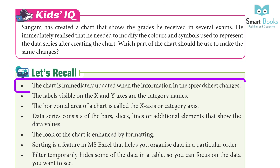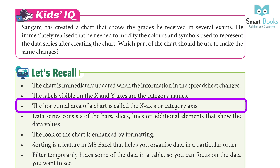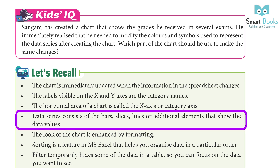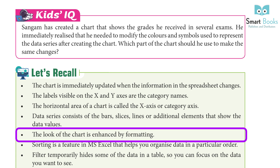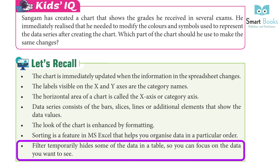Let's Recall: The chart is immediately updated when the information in the spreadsheet changes. The labels visible on the X and Y-axis are the category names. The horizontal area of a chart is called the X-axis or category axis. Data series consists of the bars, slices, lines, or additional elements that show the data values. The look of the chart is enhanced by formatting. Sorting is a feature in MS Excel that helps you organize data in a particular order. Filters temporarily hide some of the data in a table so you can focus on the data you want to see.